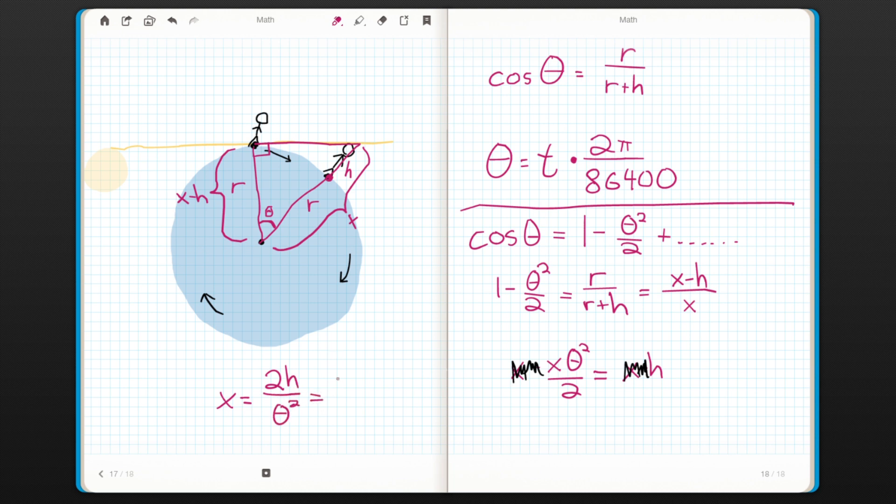From this we can see that x equals 2h over theta squared. Plugging in our expression for theta gives us x equals 2h times 86,400 over 2 pi t squared. Now I'll take all of these extra constants, the 2, the 86,400 squared, and the 2 pi squared, and combine them all into one constant that I'll call k. My calculator says that the value for k should be 3.78 times 10 to the 8th. This gives us our final expression, x equals k times h over t squared, where k is 3.78 times 10 to the 8th.